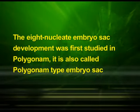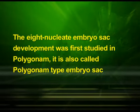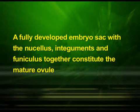The large central cell has two polar nuclei. Thus, a typical angiosperm embryo sac at maturity, though eight-nucleate, is seven-celled. This eight-nucleate embryo sac development was first studied in Polygonum, hence it is also called the Polygonum type embryo sac. At maturity, the female gametophyte or embryo sac almost fills the ovule and the nucellus is almost consumed. A fully developed embryo sac with the nucellus, integuments, and funiculus together constitute the mature ovule.